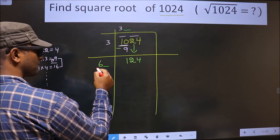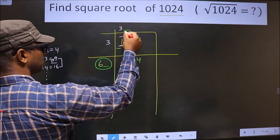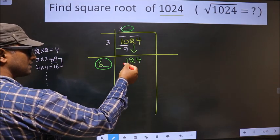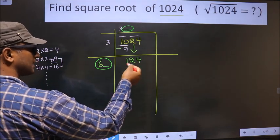And also when you multiply this number and this number, you should get a number equal to this or close to this number.